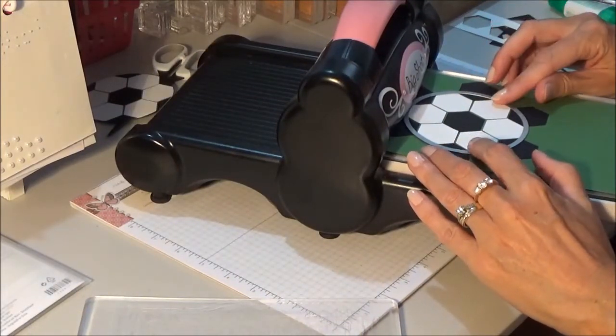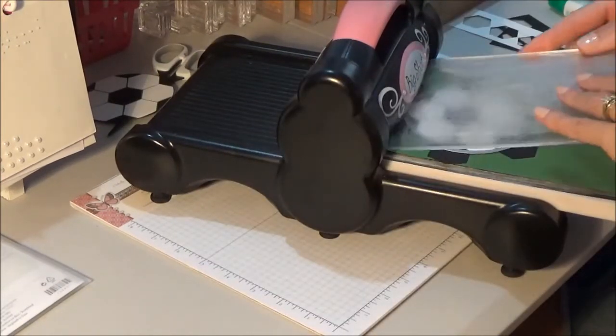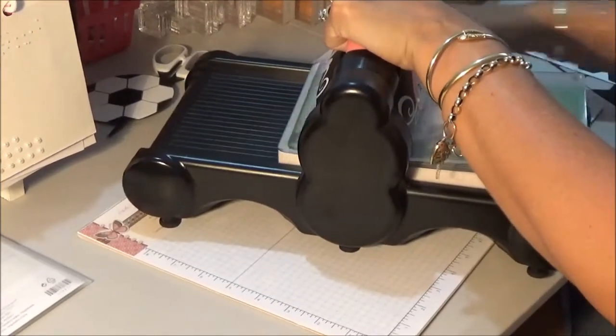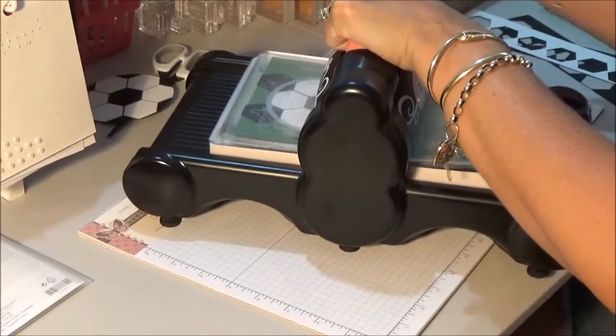Obviously with the cutting side down. Place that over the top. Put on your top acrylic plate and you can run that through the Big Shot.